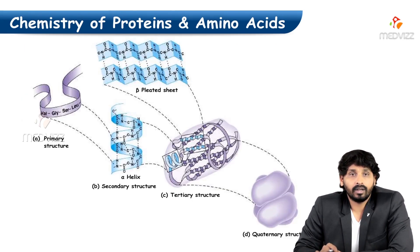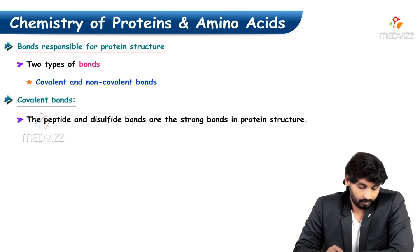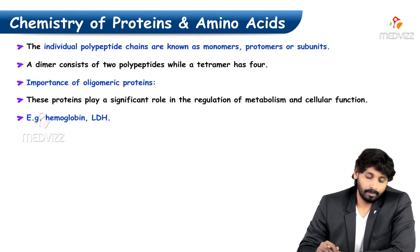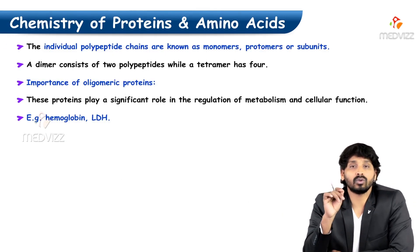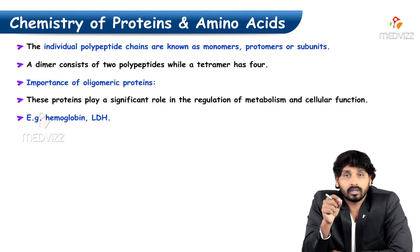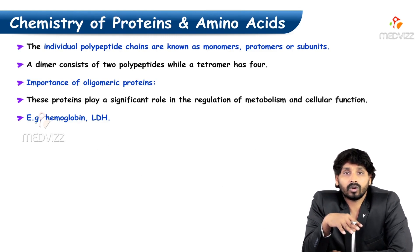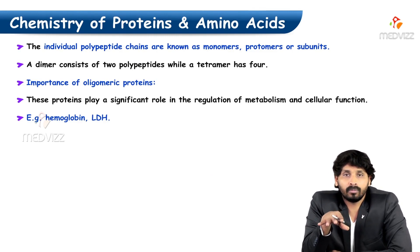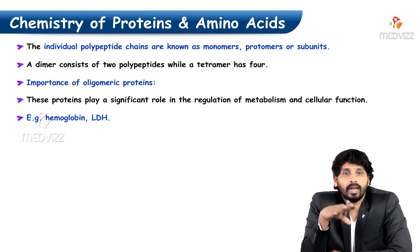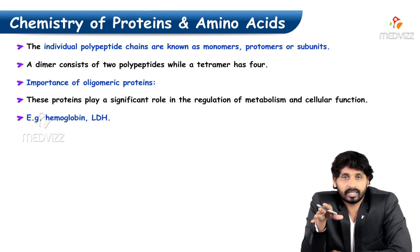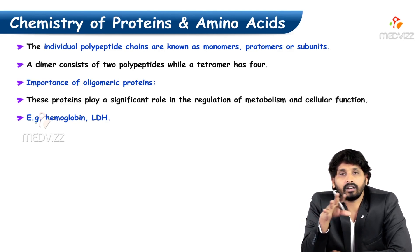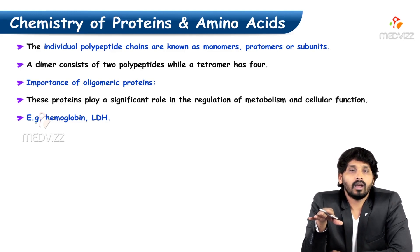The individual polypeptide chains are known as monomers, protomers, or subunits. All these monomers combine together to form a Quaternary Structure. A dimer consists of two polypeptide chains, and a tetramer has four polypeptide chains.